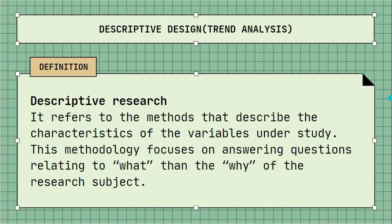We have first the definition: descriptive research. It refers to the methods that describe the characteristics of the variables under study. This methodology focuses on answering questions relating to what and the why of the research subject. We can also call this descriptive research as observational research method, as none of the variables in the study are influenced during the process of research.